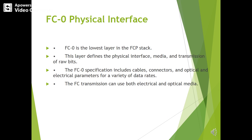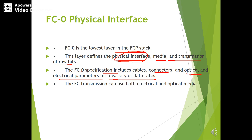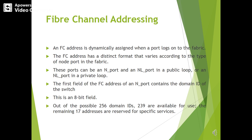FC0 is the lowest layer in the FCP stack. This layer defines the physical interface, media, and transmission of raw bits. The FC0 specification includes the cables, connectors, and optical and electrical parameters for a variety of data rates. FC transmission can use both electrical and optical media.